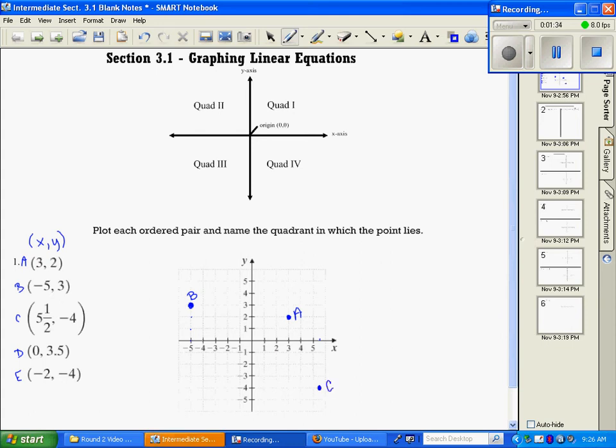And D says go on your x-axis stay at 0, but on the y-axis go to 3.5. So this falls on our y-axis, D. And E says on your x-axis go to -2, on the y-axis go to -4, and then label E. So that's just a little bit of practice plotting points.